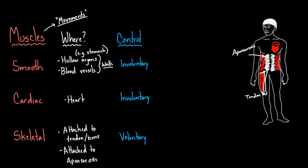What about speed? Smooth muscle is the slowest, and skeletal muscle is the fastest. The voluntary stuff you control yourself is the fastest, while the automatic stuff is pretty slow. Cardiac muscle is somewhere in the middle. When blood vessels constrict or vasodilate, that happens on a slow timescale compared to, say, jumping to catch a ball, where thousands of little muscle movements happen lightning quick.